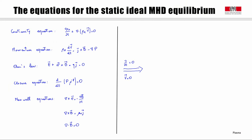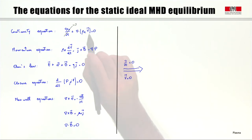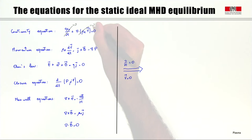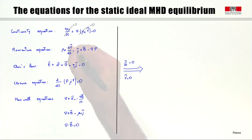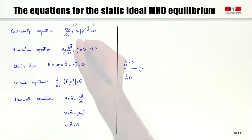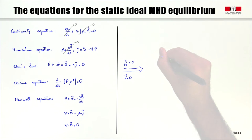Equilibria that are non-static, where an equilibrium flow is present, are very interesting. However, for simplicity in this course, we will focus only on the simpler static equilibria. Within this hypothesis, for the continuity equation, because d/dt equals zero and V equals zero, the equation reduces to zero equal to zero and is always satisfied. For the momentum equation, the time-derivative term drops as V is zero, and therefore the momentum equation becomes a force balance equation: J cross B minus grad P equal to zero.